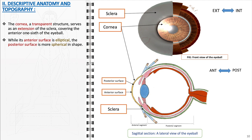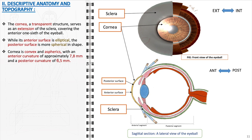This aspheric nature allows for efficient light refraction and focusing. The curvature of the cornea is a critical feature. Its anterior curvature has an average radius of about 7.8 mm, while the posterior curvature is slightly steeper with a radius of 6.5 mm. These curvatures are vital for the cornea's refractive capabilities.